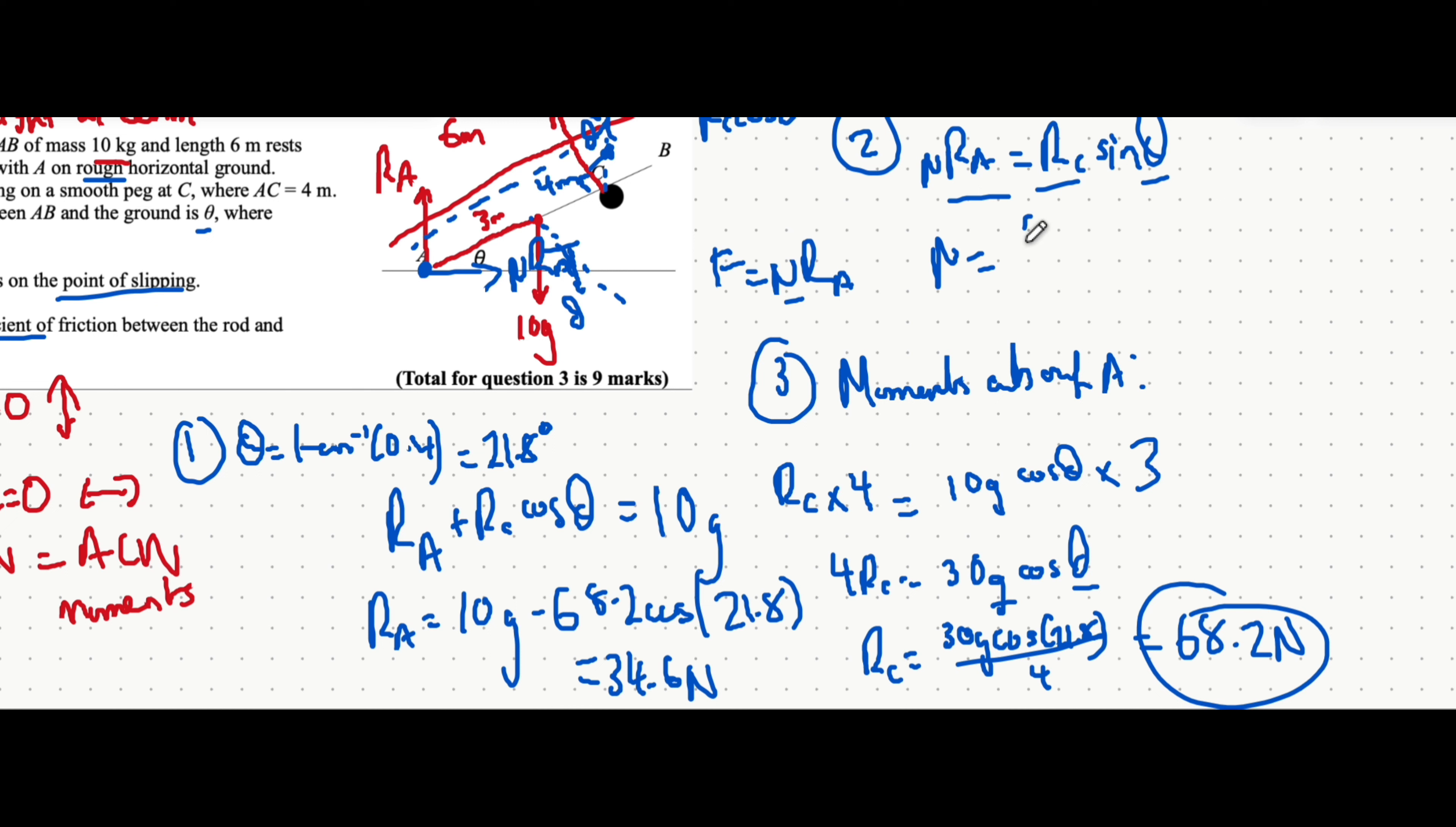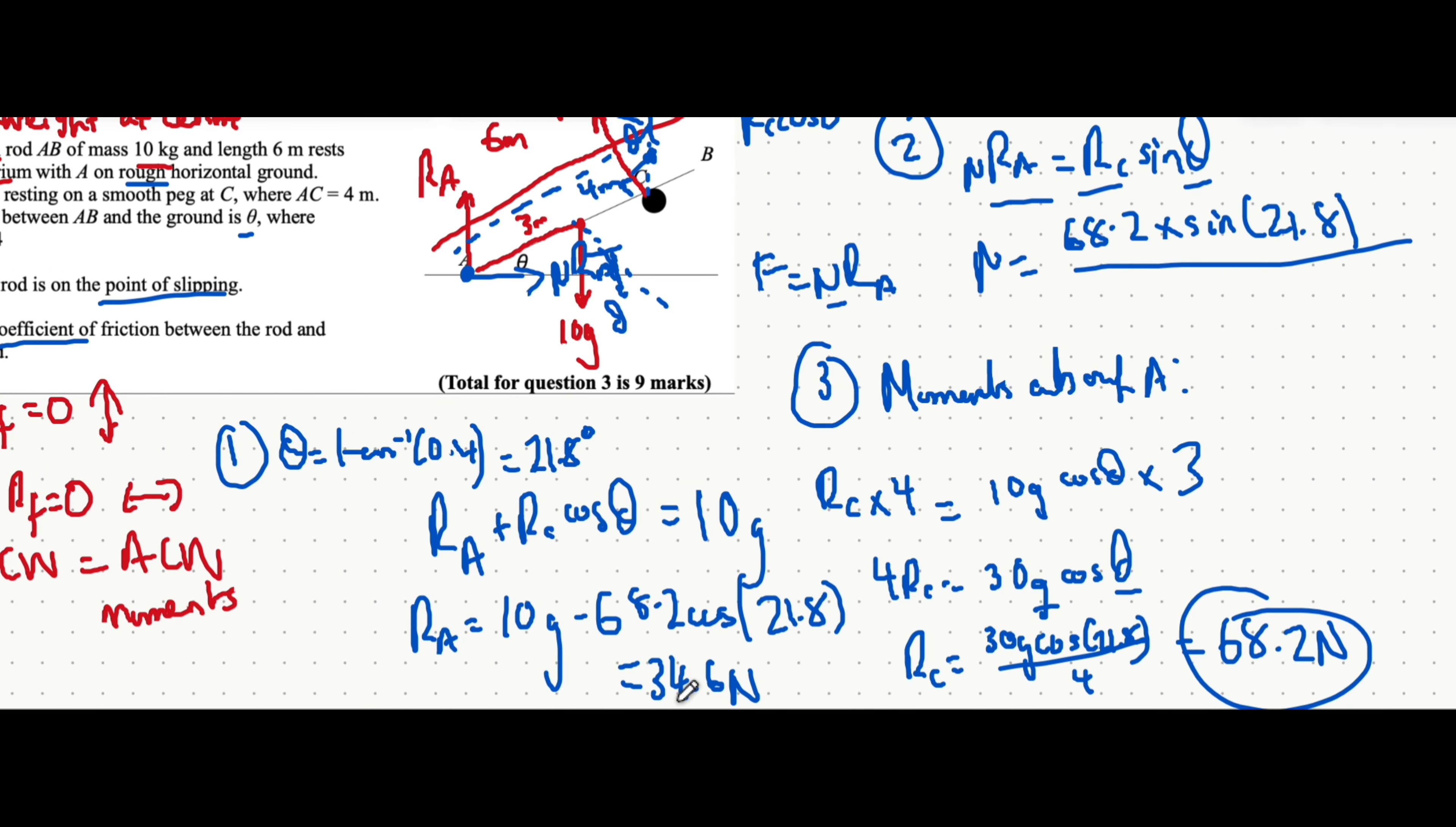So R_C sin theta is, well, R_C is 68.2 multiplied by sin of the angle 21.8, all divided by the reaction force at A, which is equal to 34.6. You put all of that into your calculator. So we have 68.2 multiplied by sin of 21.8, all divided by the answer that we just got and it's equal to 0.731.